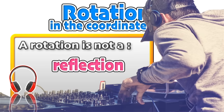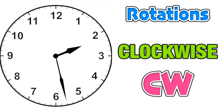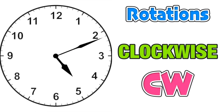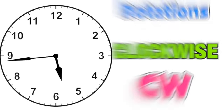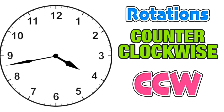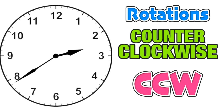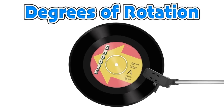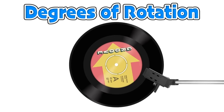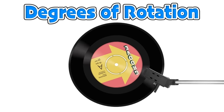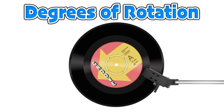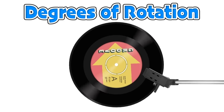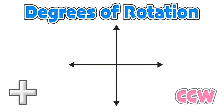A rotation should not be confused with reflections. We are going to reference two directions for rotations: clockwise rotations move the same way that a clock does, and counterclockwise rotations move in the opposite direction. In addition to direction, we reference rotations in terms of degrees — just like this circular record, our degrees are going to be between 0 and 360.